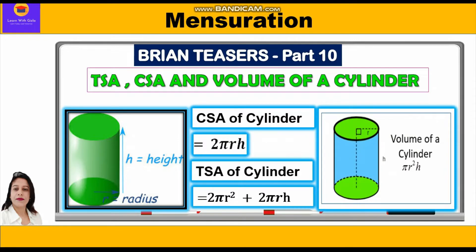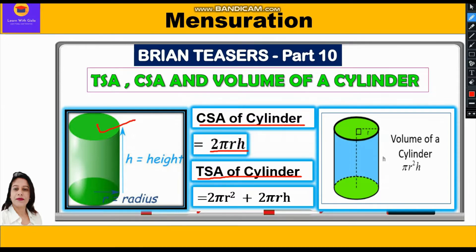The curved surface area of a cylinder, as we know, is the circumference of the base into height, so it is 2πrh. The total surface area of the cylinder is the sum of the area of the two circular bases — the top and the bottom — plus the curved surface area.